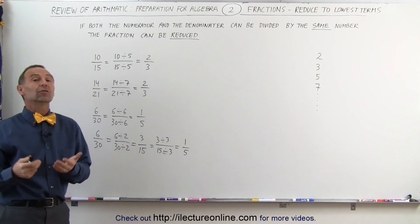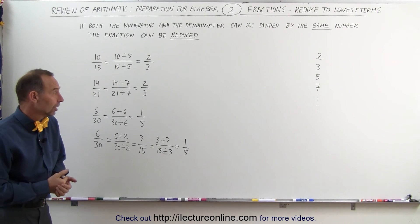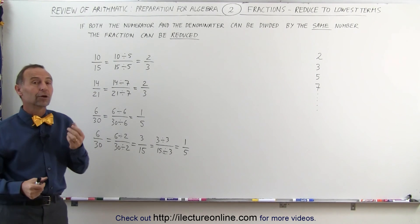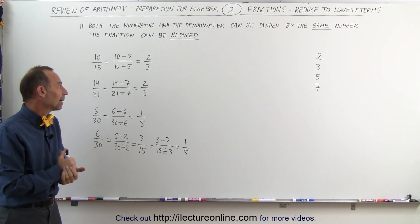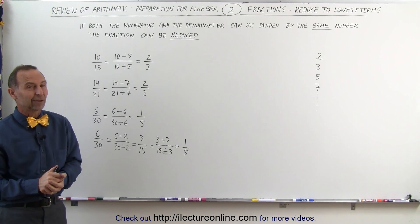That's what we mean by reducing a fraction to its simplest terms. Looking for the numerator and denominator and look for what number can they both be divided by at the same time. And that's how we reduce these fractions. That's how it's done.